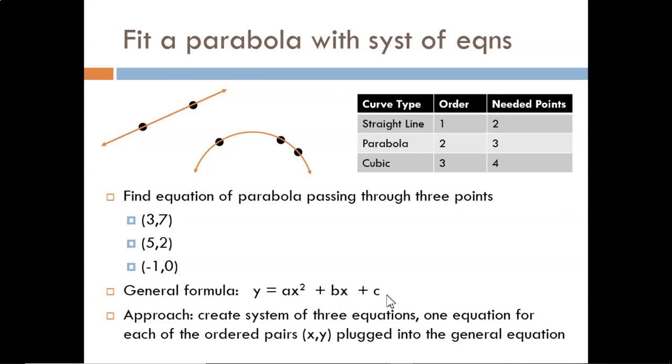I will then apply the general formula for a parabola shown here. The goal will be to identify the unique set of a, b, and c values that pass through all three ordered pairs. To do this, I will create a system of three equations by plugging in the ordered pairs to the general equation.